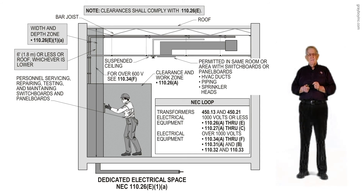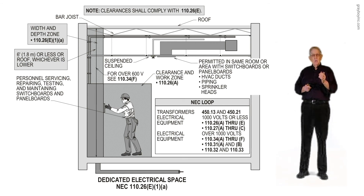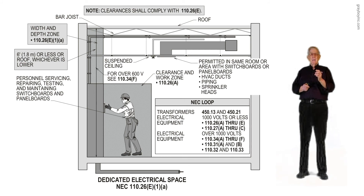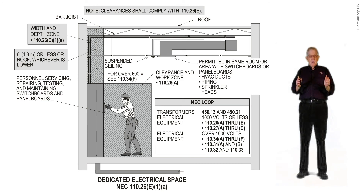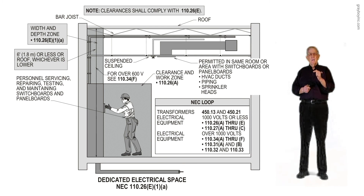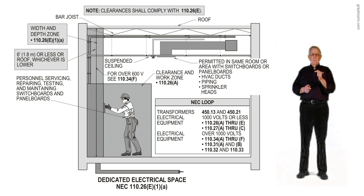Figure 5-10.1A deals with the dedicated electrical space above the equipment, and we also have space in front of the equipment. The gray-scaled information shows the 6-foot above the equipment, the 3-foot depth, and the width of the equipment. The 6.5-foot headroom is based on the height of the equipment, since the equipment has a greater height than the electrician. This figure illustrates the dedicated workspace in compliance with NEC 110.26E1A.